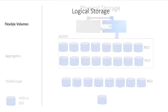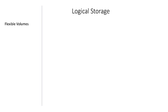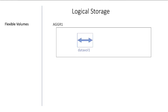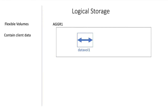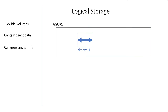Then there is logical storage, in which parts of the physical grouped environments can be carved out in the form of volumes, which can be accessed by clients via multiple protocols. These volumes are officially called flexible volumes. As an example, you can create an aggregate of 5 terabytes and then create a 500 megabyte volume in that aggregate. The volume can then be made accessible to clients to store data. The volume can be grown and it can be shrunk, either manually or automatically.